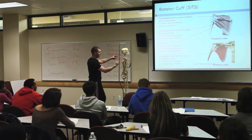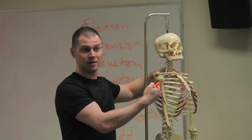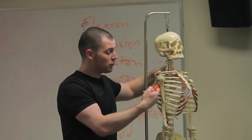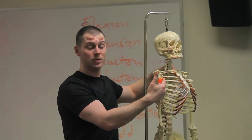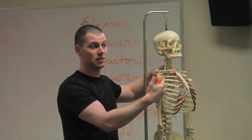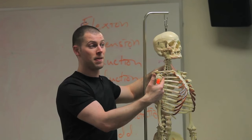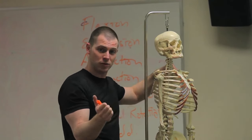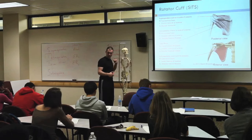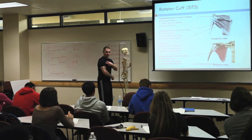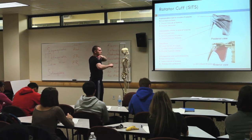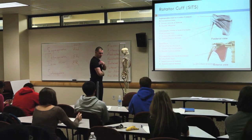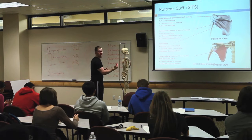Subscapularis is underneath the scapula. It goes from the front of the scapula to the front of the humerus - so what type of rotation? Internal. We have two muscles in the back pulling this way, the one on top pulling this way, and then the one in the front that pulls it this way - internal rotation.